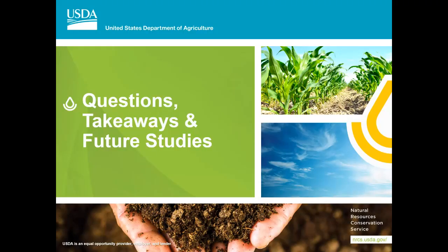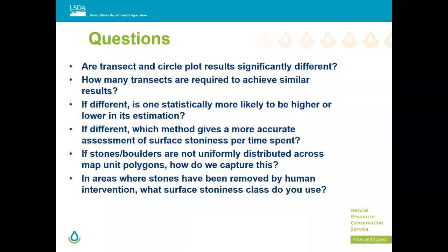Takeaways and questions: Are transect and circle plot results significantly different? In at least 20% of cases, yes. How many transects are required to achieve similar results? Clearly more than two. Is one statistically more likely to be higher or lower? The area method is lower. Which method gives a more accurate assessment per time spent? That's the biggest question. If stones and boulders are not uniformly distributed across mapping polygons, you ultimately need to do multiple transects — as I experienced where stones had moved to the bottom of the slope with none in the upper part.